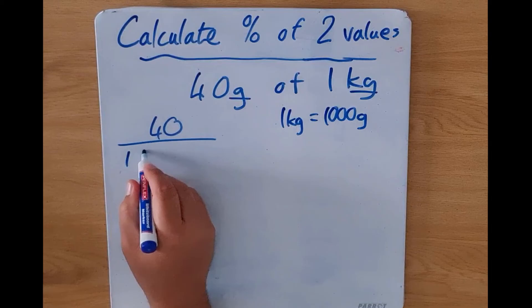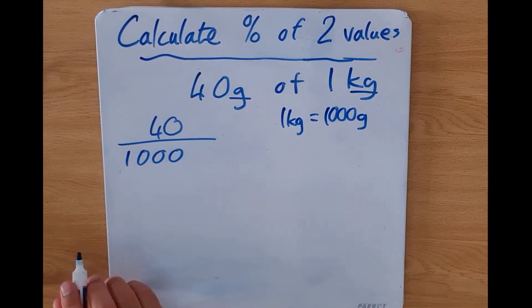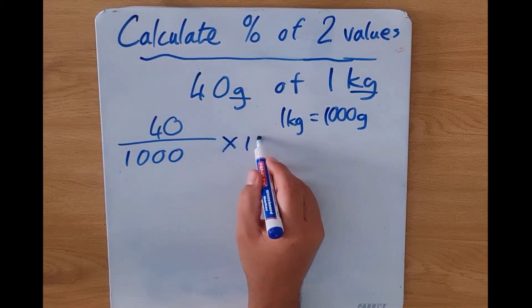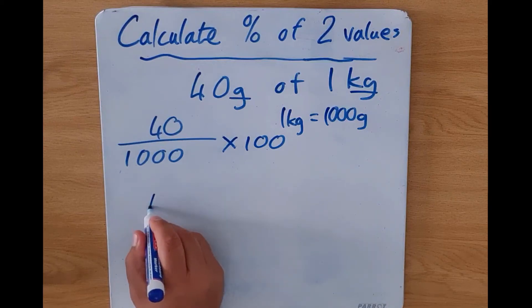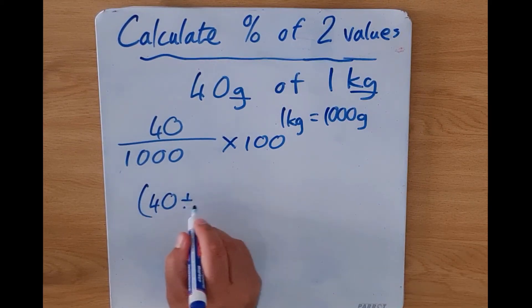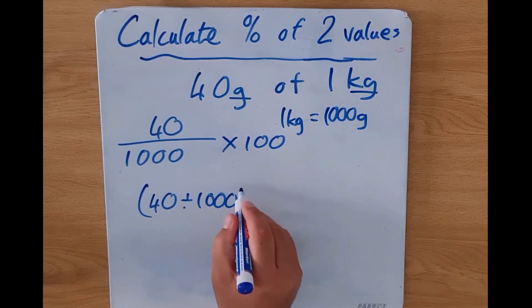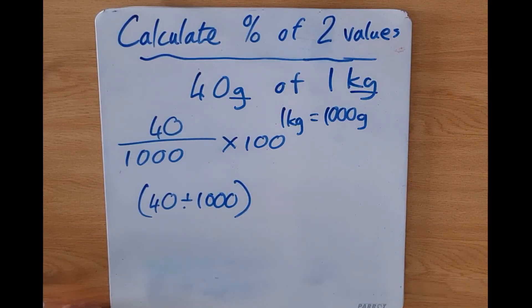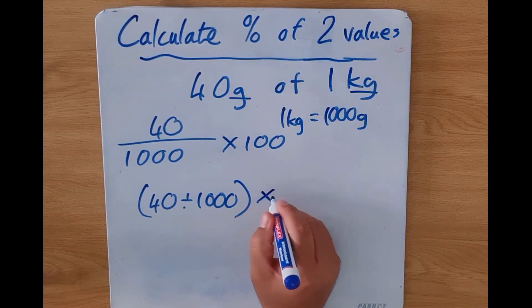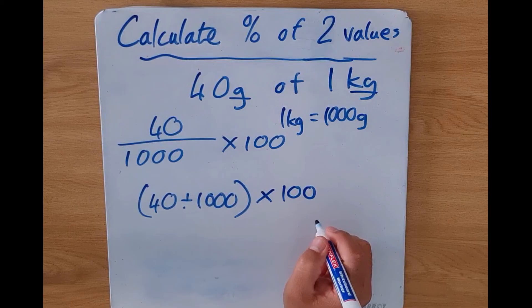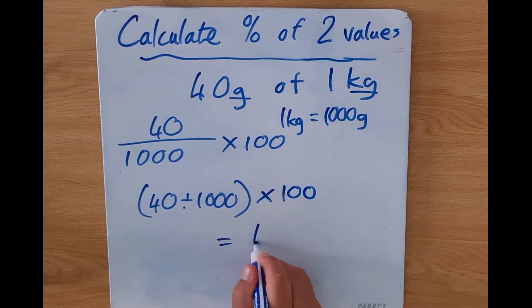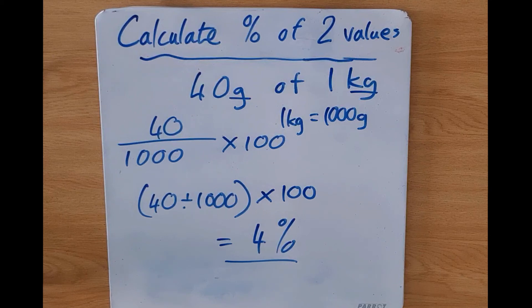So I'm going to divide my 40 by 1000 grams and again multiply it then by 100. So there you can see folks, my 40 divided by 1000 and I'm going to multiply that by 100, and that will give me an answer of 4 percent. And this is how we calculate the percentage of two values.